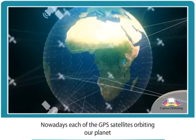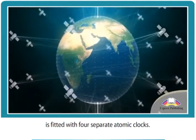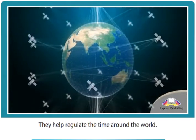Nowadays, each of the GPS satellites orbiting our planet is fitted with four separate atomic clocks. They help regulate the time around the world.